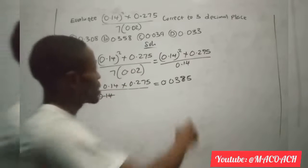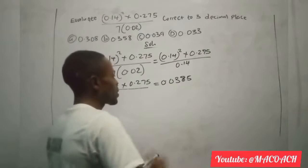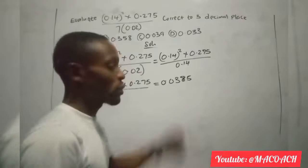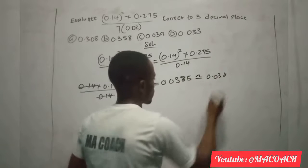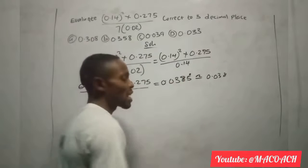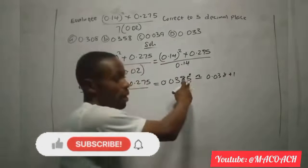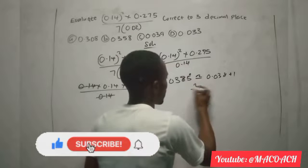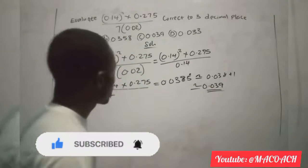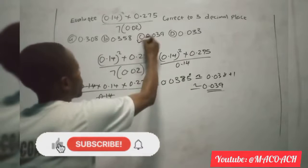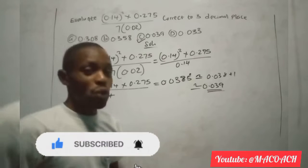Our answer has four decimal places, but we need to correct to three decimal places. We stop at the first three: 0.038. The fourth digit is 5, which we consider as a rounding number — five rounds up, so we add 1 to the 8, giving 9. Therefore, to three decimal places our answer is 0.039. Looking at our options, this is option C.